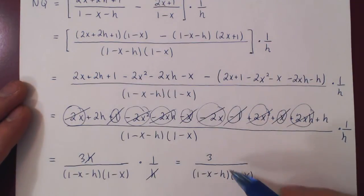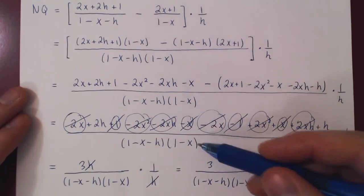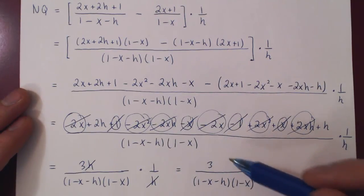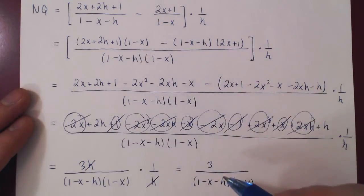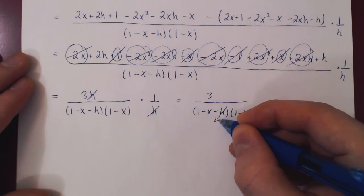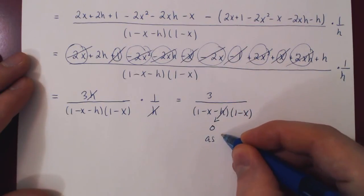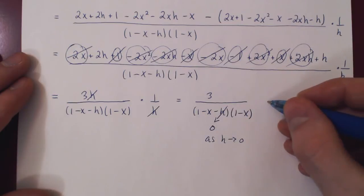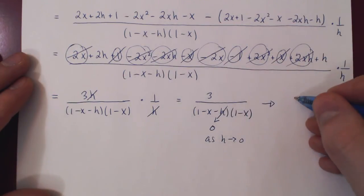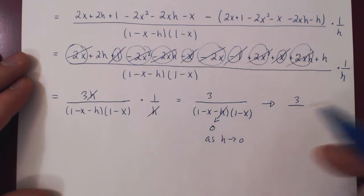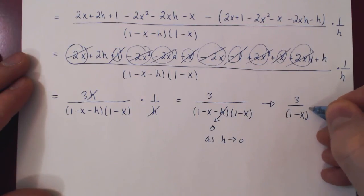This is the simplified Newton's quotient for the rational function — it took some work but is quite nice. As the final step, when we let h shrink to zero, the h term in the denominator disappears. We're left with 3 over 1 minus x times 1 minus x, which simplifies to 3 over 1 minus x squared.